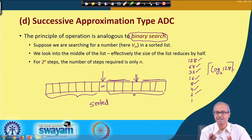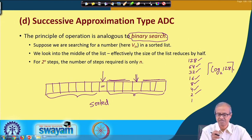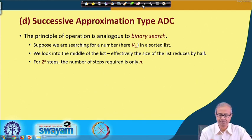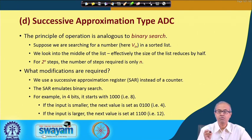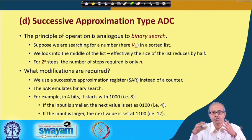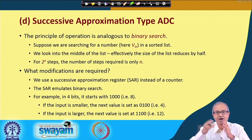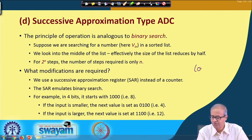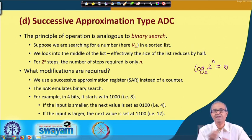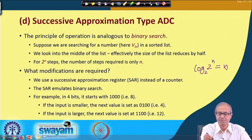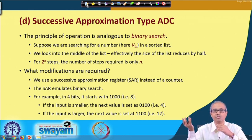This successive approximation technique is like implementing binary search in hardware to perform the AD conversion. For 2 to the power n elements, you need log base 2 of 2^n comparisons, which equals n. So if we can implement this, we need only n clock pulses and not 2 to the power n clock pulses.